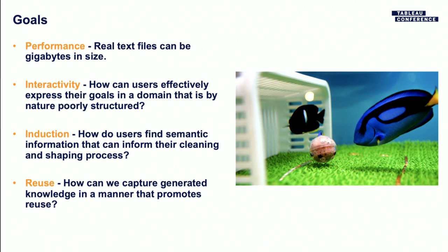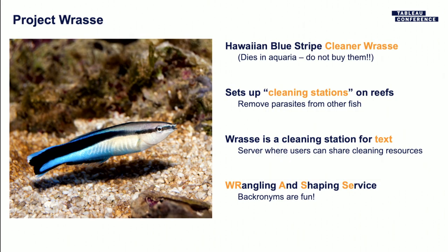The result of this was something I called Project RAS. This beautiful fish is the Hawaiian Blue Stripe Cleaner Wrasse — sometimes people try to sell them for aquariums, but please don't, they die. They live by setting up cleaning stations on reefs to remove parasites from fish, so if you don't have enough fish with parasites they will die. Project RAS here was a cleaning station for text — a server where multiple users could come in and share and clean their text. The backronym is Wrangling And Shaping Service.